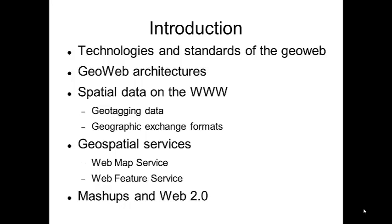We're going to go through the technologies and standards of the GeoWeb, cover GeoWeb architectures, look at how we geotag spatial data on the web, how we exchange geographic data across the web, and then two types of service standards that exist: web map service and web feature services, finishing up with a general discussion about mashups and Web 2.0.